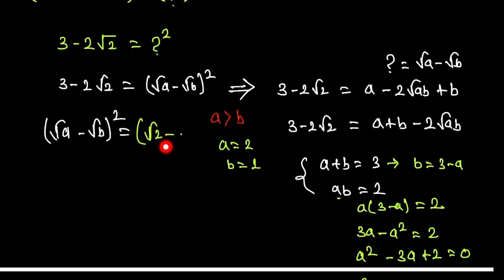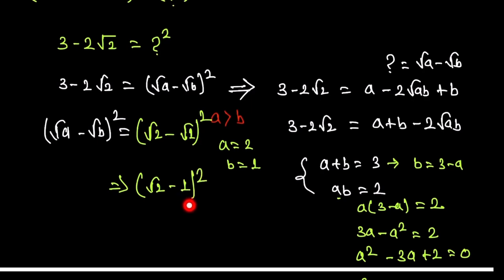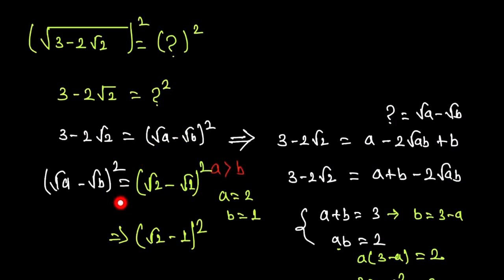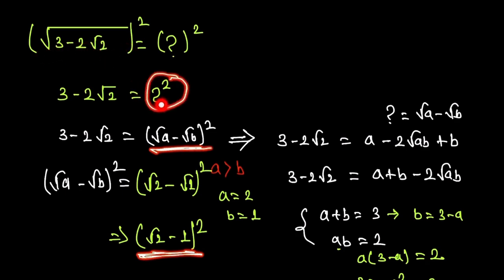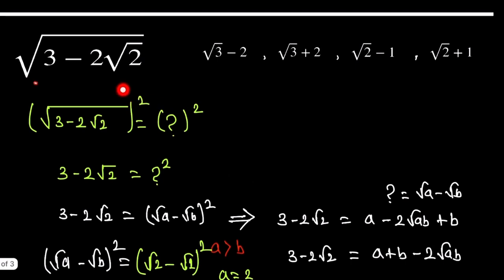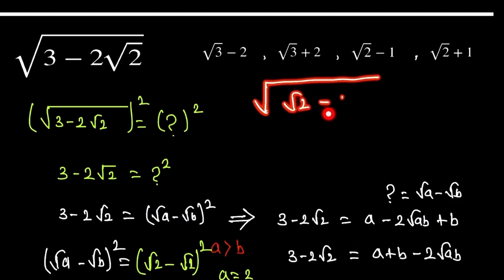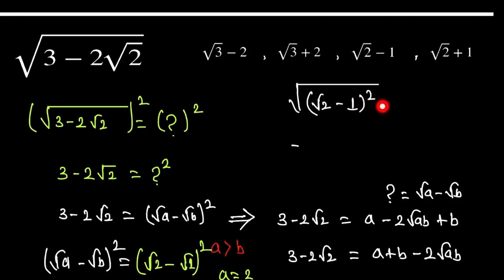Substituting back, (√a - √b)² = (√2 - √1)² = (√2 - 1)². So √(3 - 2√2) = √2 - 1. This is our final answer.